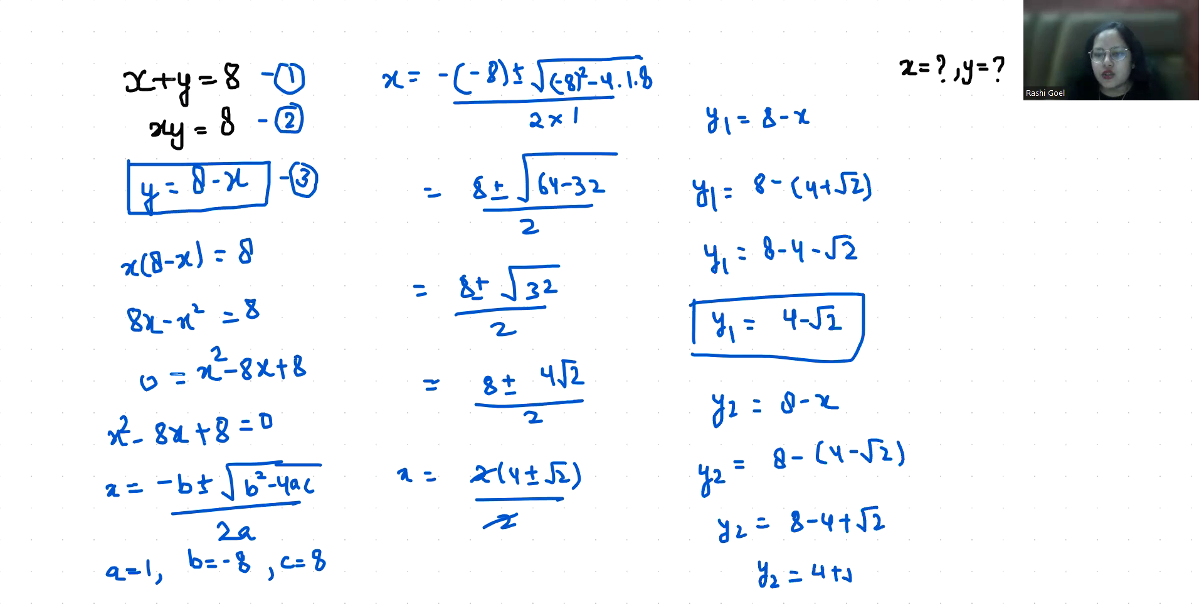So these are the values of x and y. So x1 is 4 minus root 2 and y1 is 4 minus root 2. If x2 is 4 plus root 2, then y2 is 4 minus root 2.